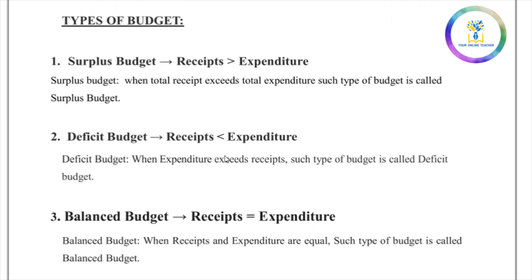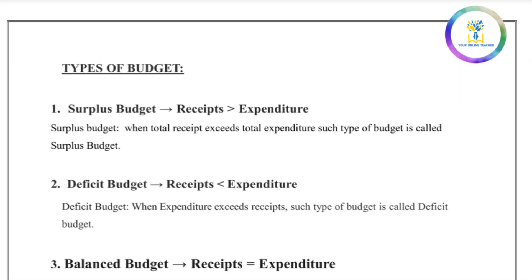We have learned three types of budget: surplus budget, deficit budget, and balanced budget. In a surplus budget, government receipts are greater than expenditure. That is it for us to study the focus area in this chapter.